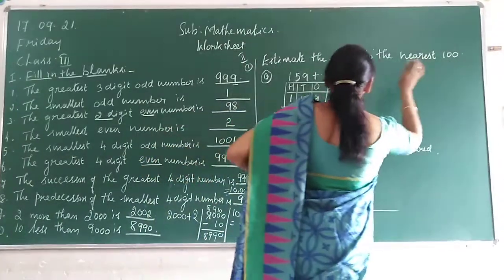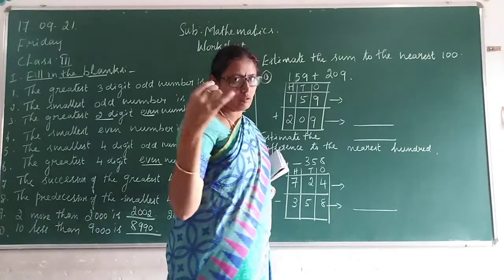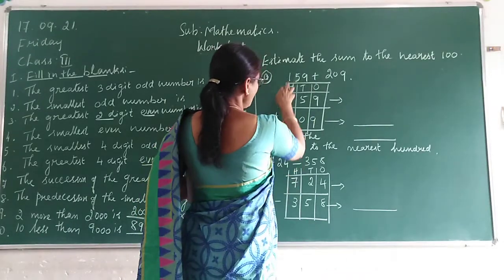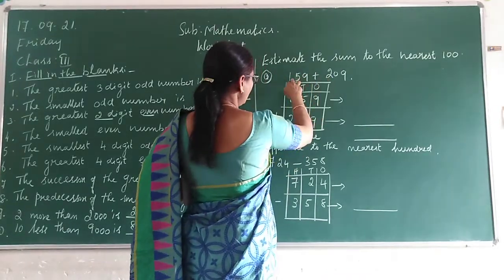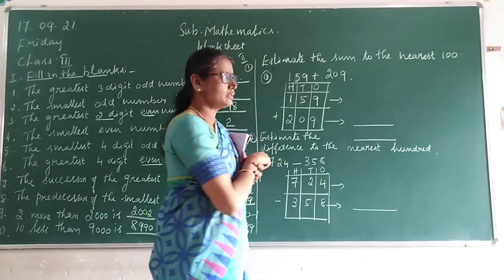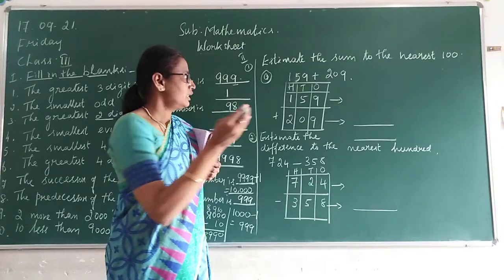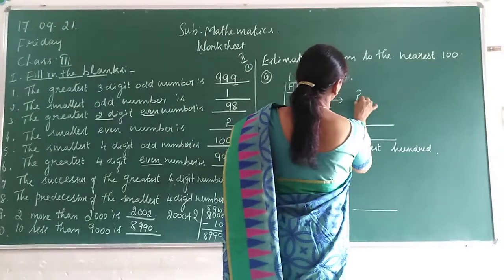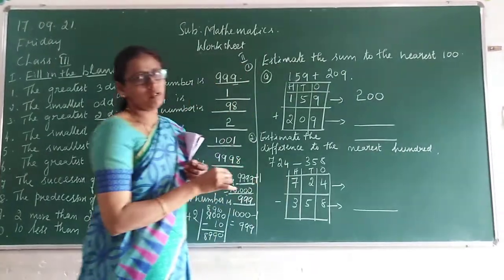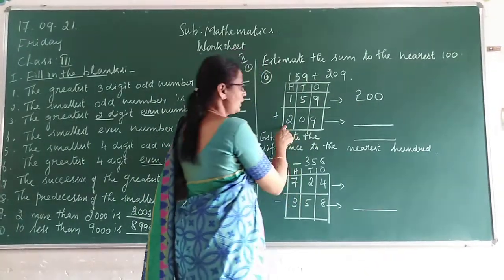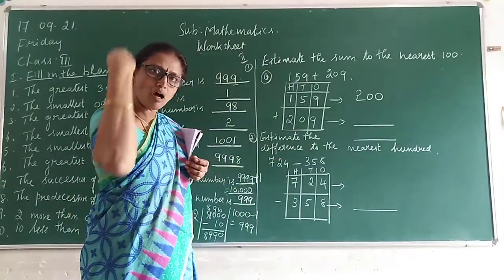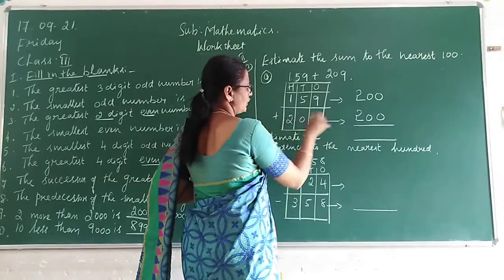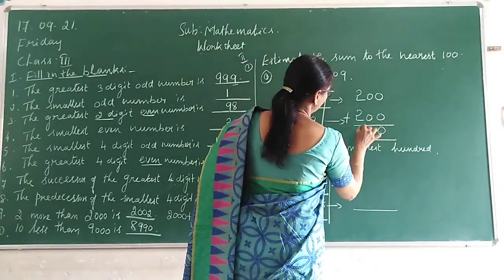Estimate of sums to the nearest hundred. Given: 159 plus 209. 159 is nearer to 200. 209 is also nearer to 200. So you estimate: 200 plus 200 equals 400. The estimated sum is 400.